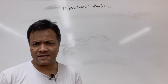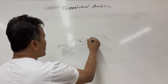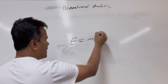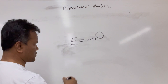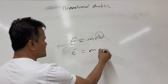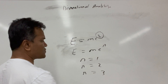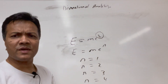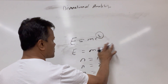Today we are going to talk about dimensional analysis, and let's start with E equals mc squared. When we talk about E equals mc squared, we are talking about dimensional analysis. Einstein wasn't sure whether the exponent was 1, 2, 3, or 4 — he actually wrote E equals mc^n. He used dimensional analysis to figure out that n is actually 2.